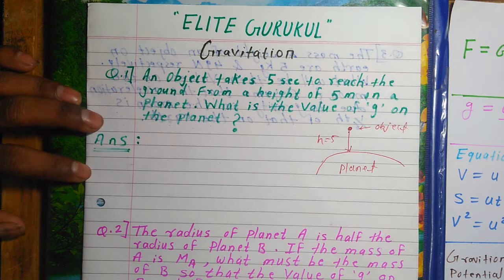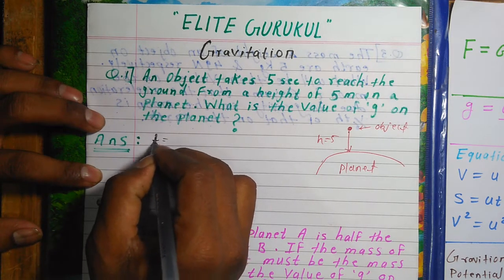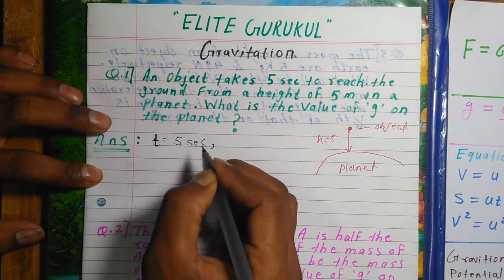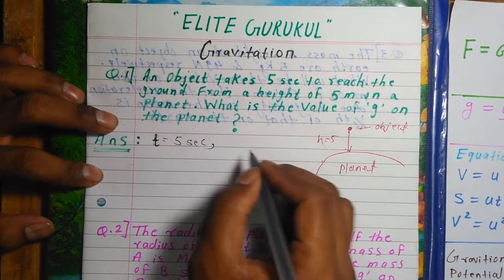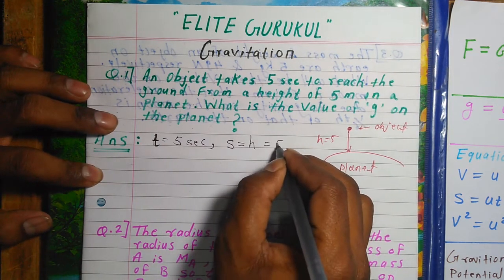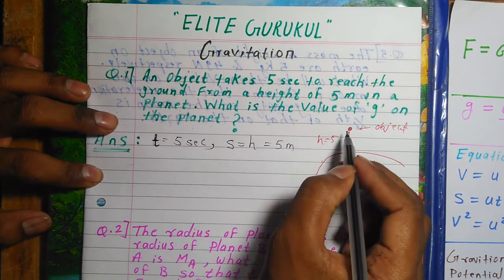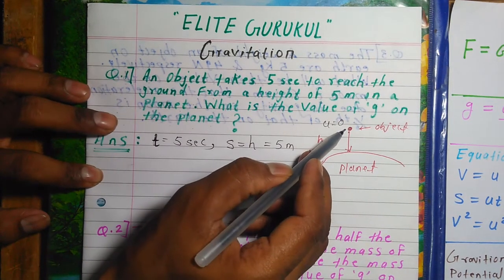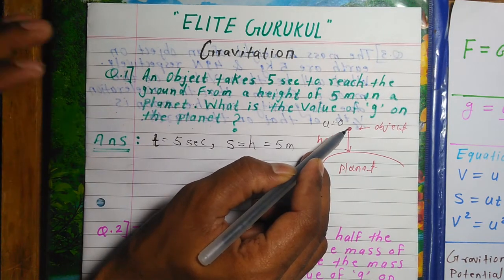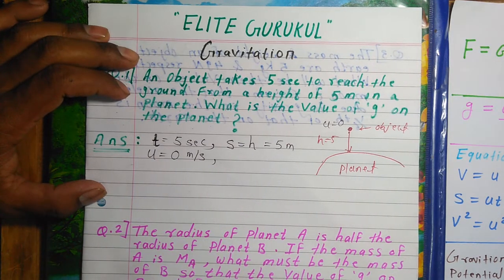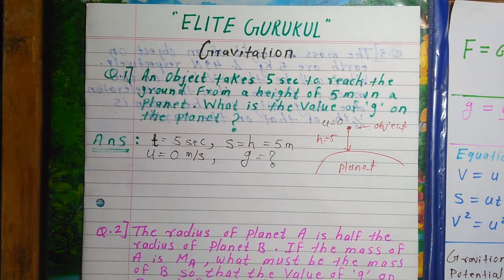All the given data: time t = 5 seconds, displacement s = 5 meters, initial velocity u = 0 m/s, and we need to find g. We look at the three equations of motion. Since we have s, u, t, and need g (acceleration), we use the second equation: s = ut + ½at². Here acceleration a is replaced by g.